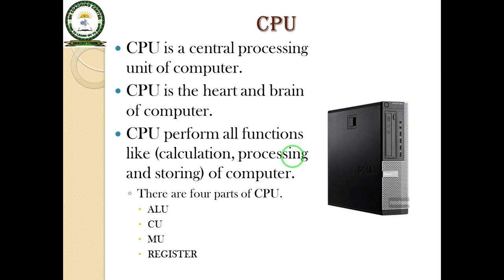CU means Control Unit — it controls all activities and functions of the computer. Memory Unit is a part of CPU which has the ability to store instructions and data. The fourth part is Register. Registers work like neurons — they convey the message from one part to another part of the computer.